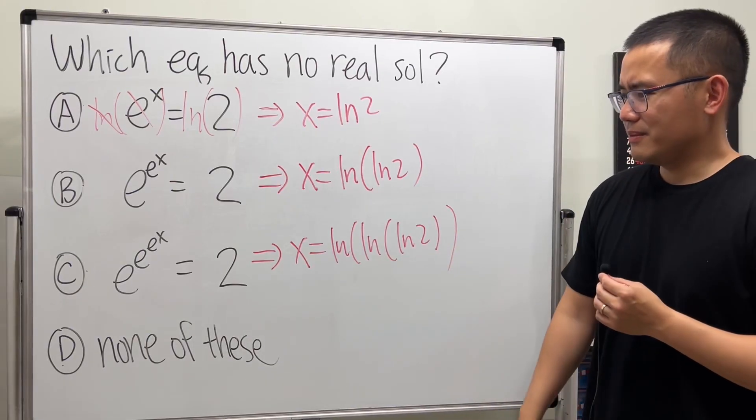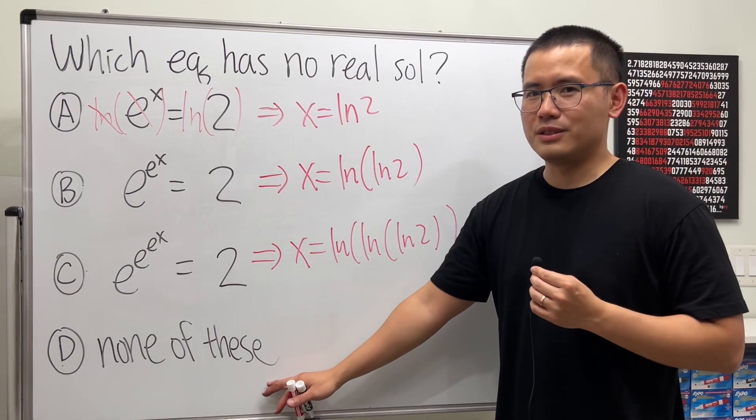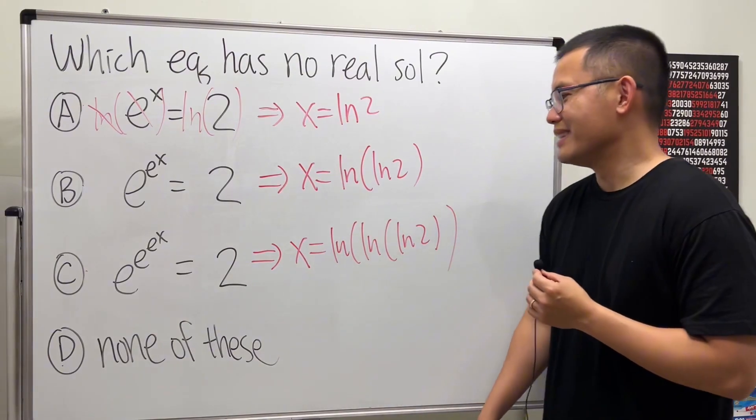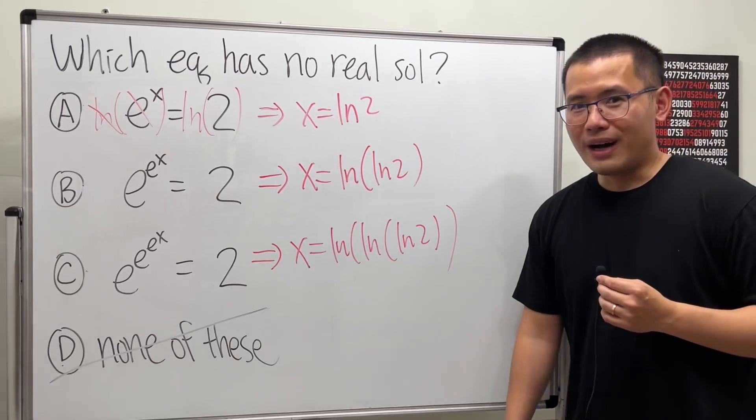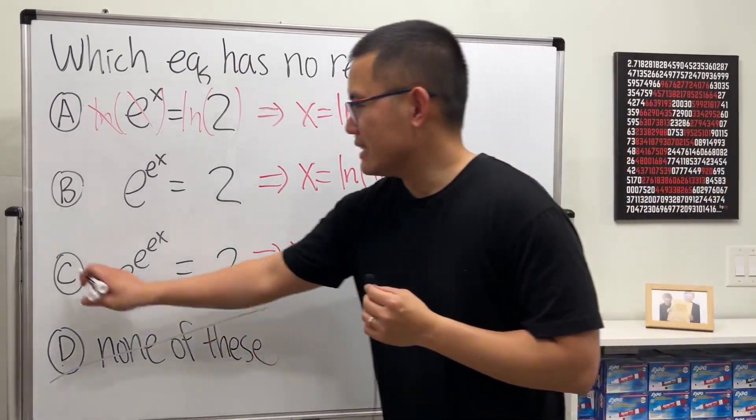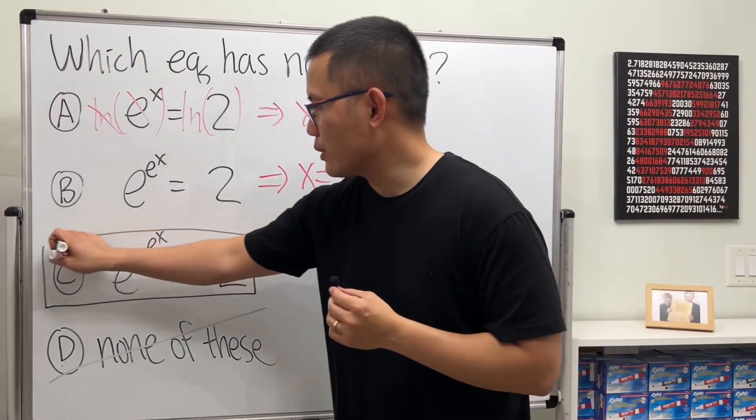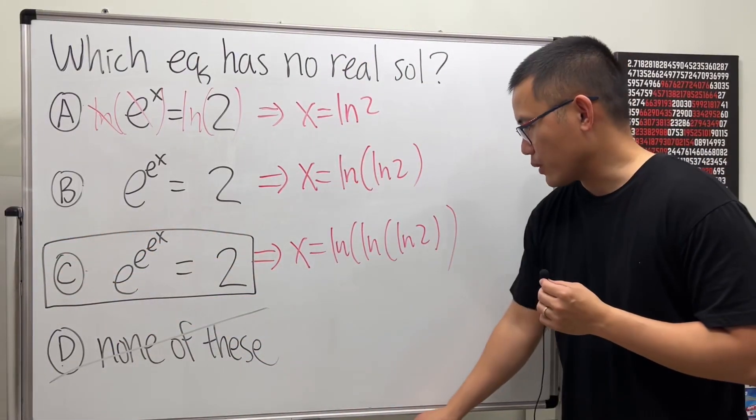So, they all seem legit. And many people thought the answer is just D. But, in fact, no, it's not D. Why? Because C is actually the one that has no real solutions. And this is the reason why.